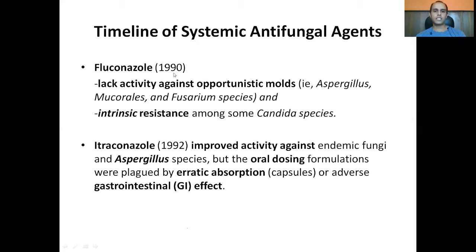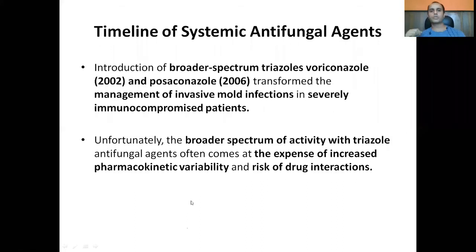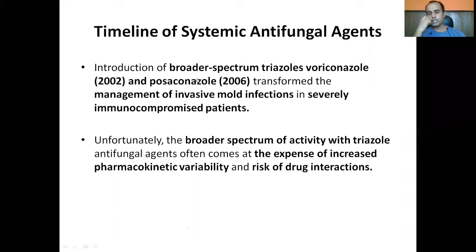Itraconazole came in 1992 with improved activity against endemic fungi and Aspergillus species, though it had erratic absorption and adverse GI effects with oral formulations. Voriconazole became FDA-registered in 2002 and posaconazole in 2006, transforming the management of invasive mold infections in severely immunocompromised patients. However, broad-spectrum triazoles come at the expense of increased pharmacokinetic variability and risk of drug interactions.